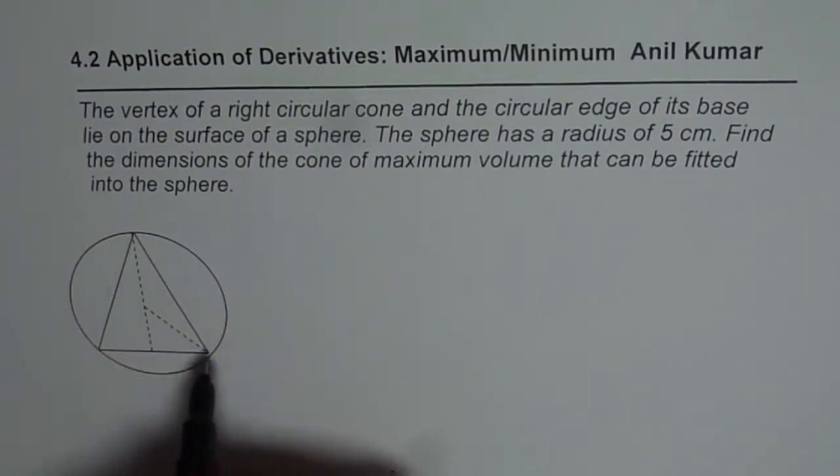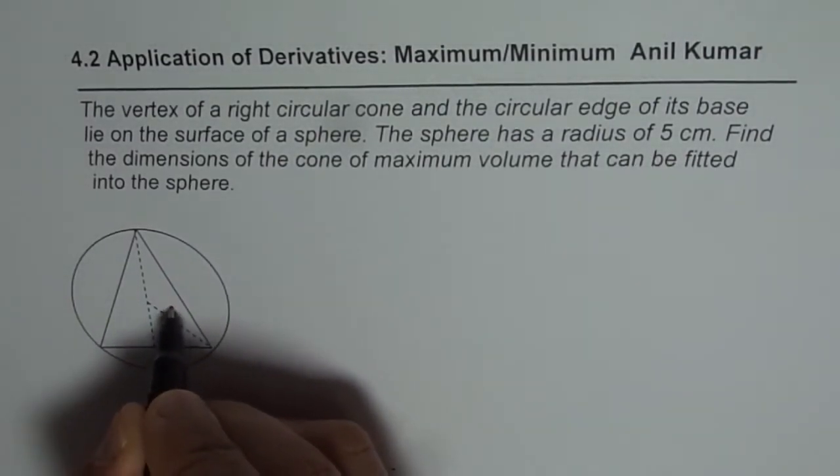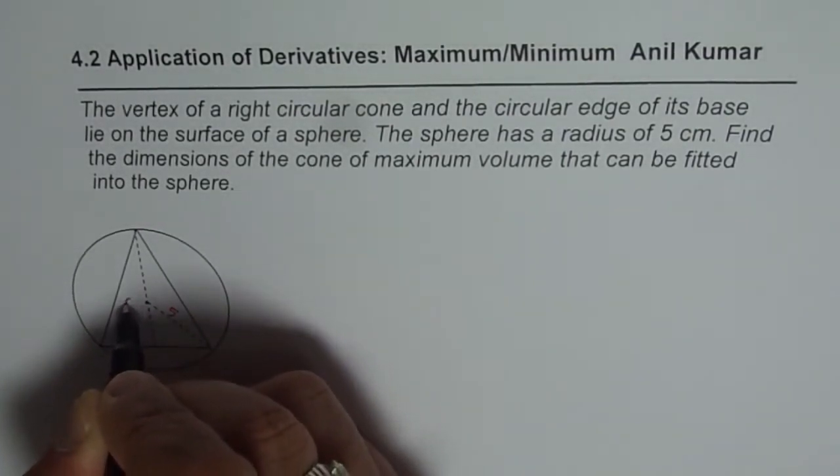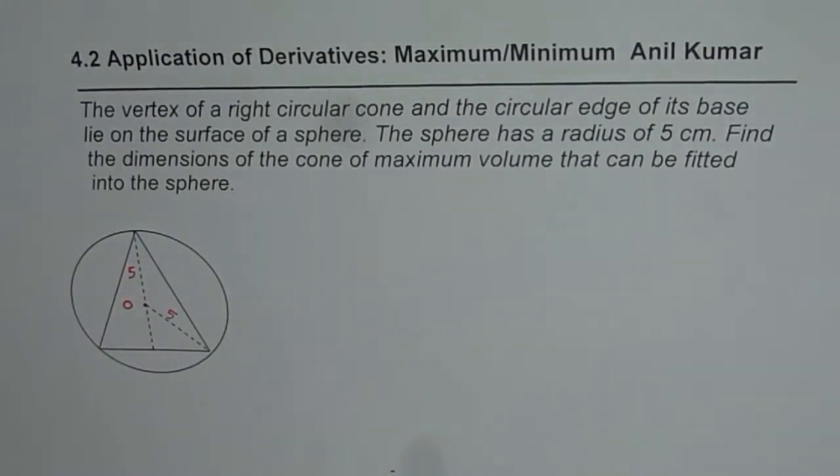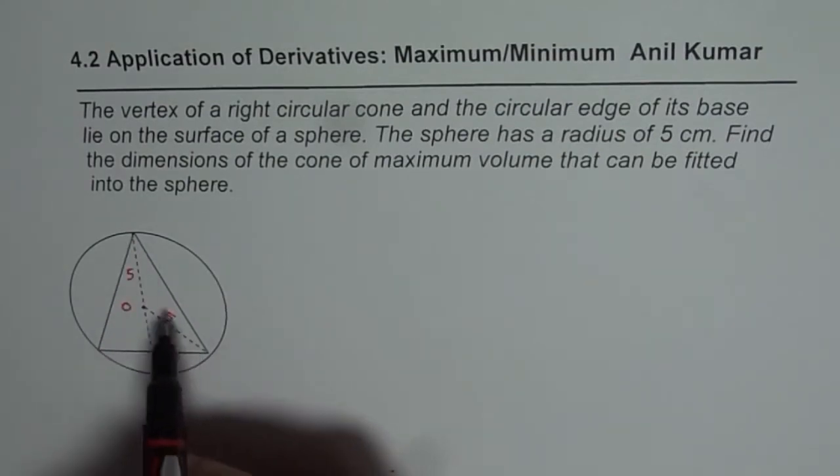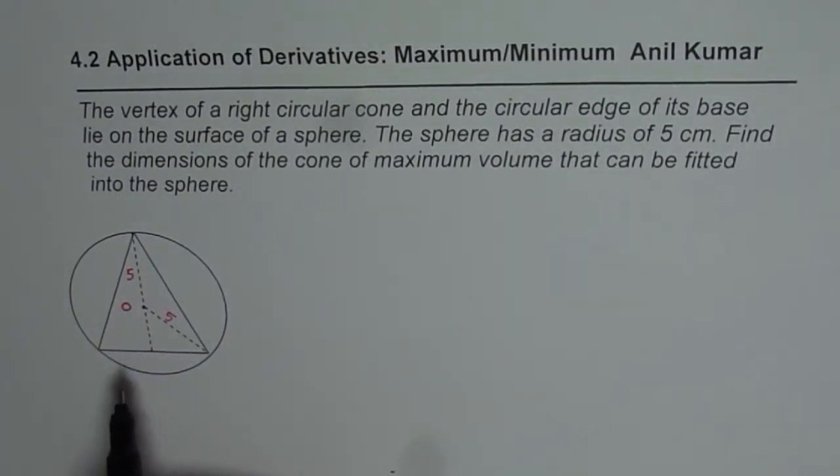Find the dimensions of the cone of maximum volume that can be fitted into the sphere. So what we are given here is a sphere which has a radius of 5 cm. So this is the radius which is 5 cm. So it is 5 from here and that is the center, let's call it O, and this is also 5. So the sphere has a radius of 5 cm.